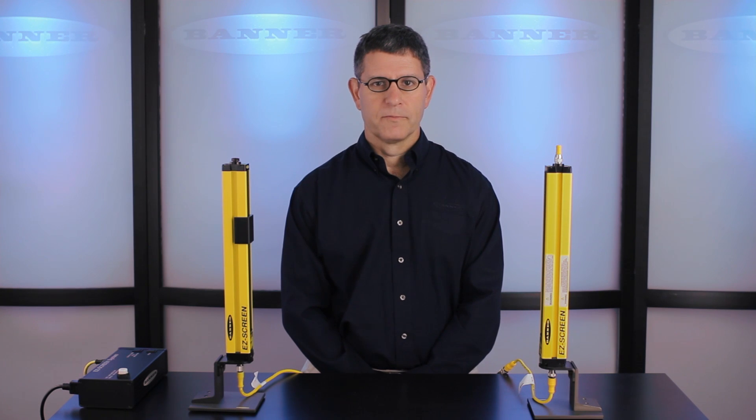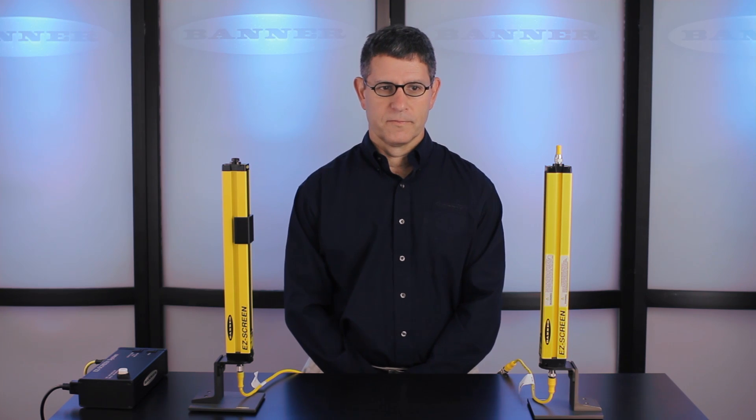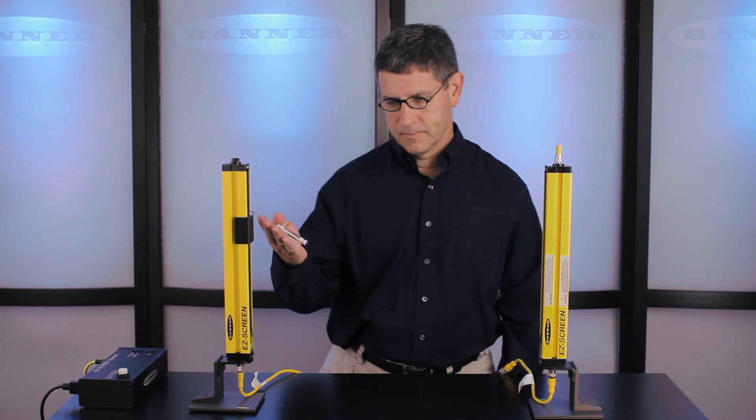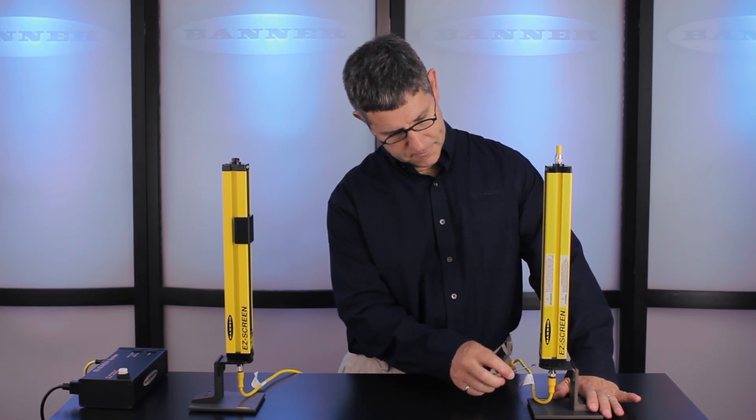In this video, we'll show you how to perform fixed blanking on the EasyScreen system. By now you've installed the EasyScreen system on your machine, you've placed your obstruction in the protected field, and now we're ready to set the dip switches.